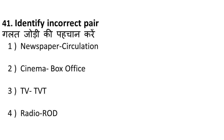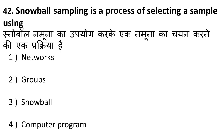Next question: identify the incorrect pair. Newspaper popularity is measured by circulation — correct. Cinema popularity is measured in box office terms — correct. TV popularity is measured by TWT (television viewership in thousands) — correct. Radio popularity is measured by RAM (Radio Audience Measurement), not ROD. So the incorrect pair is radio-ROD, which should have been radio-RAM.